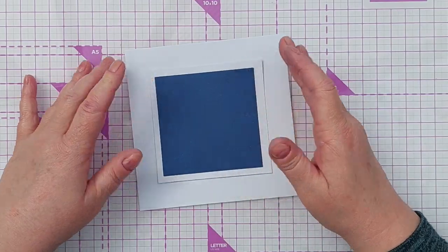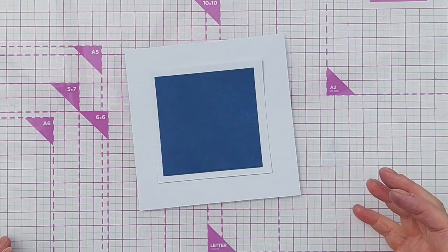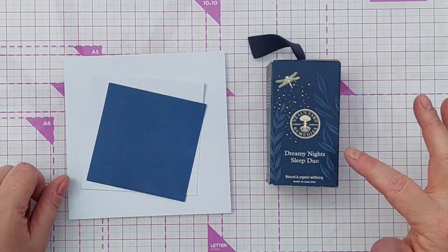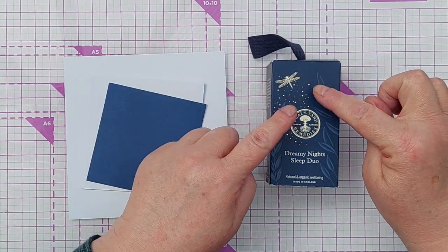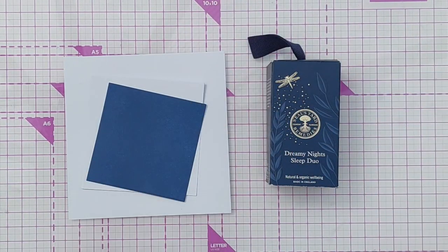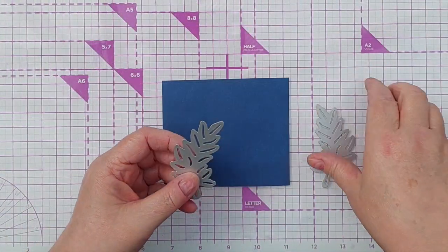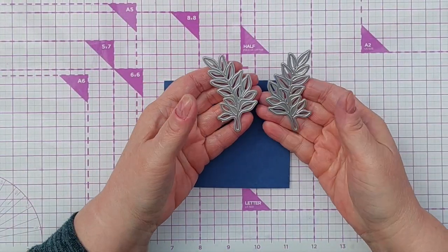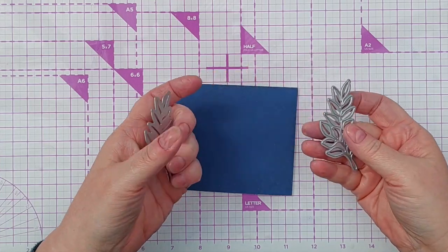I could have made the whole card blue but I think it's more impactful if the blue is contained within this big white frame. So that's the background done really. Now I'm going to create these embossed leaves and I've got these two dies, they are mirror images of each other.